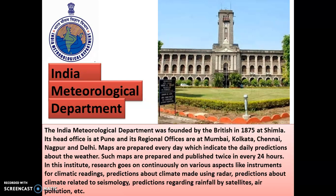Maps are prepared every day which indicate daily predictions about the weather. Such maps are prepared and published twice in every 24 hours, because climate or weather is a very unpredictable thing. Maybe before 12 hours the weather is one way and suddenly it will change, so therefore twice the maps are made in a day.